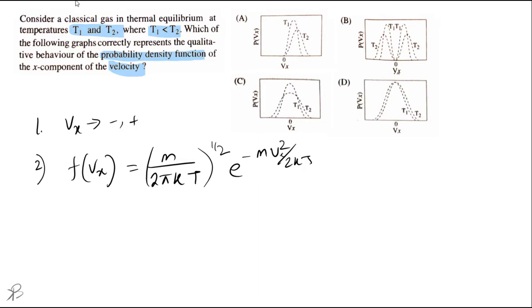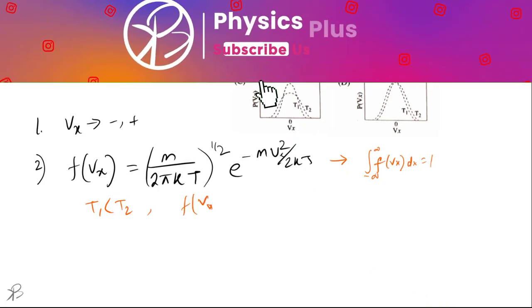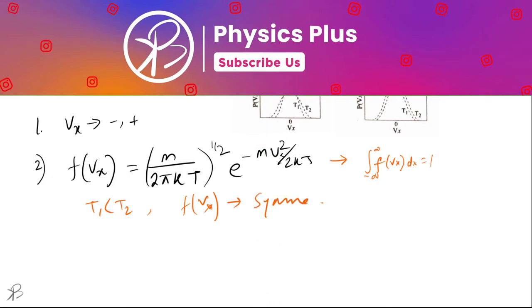By the way, if we integrate this equation from minus infinity to infinity f of vx dx it will give one. Now if T1 is less than T2, and basically from the expression we can tell that the probability distribution function is a symmetric gaussian function. It is proportional to some expression of v square, so it is symmetric.